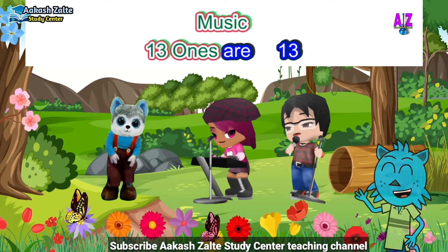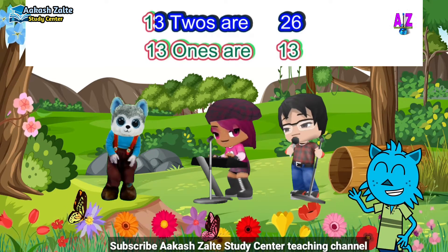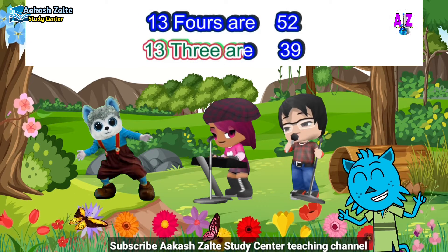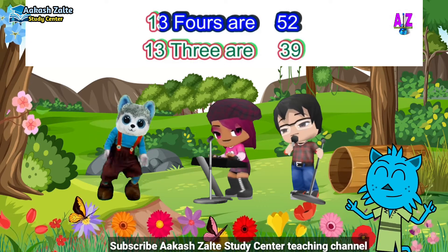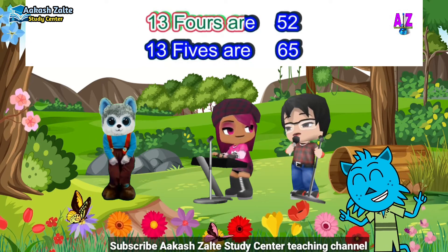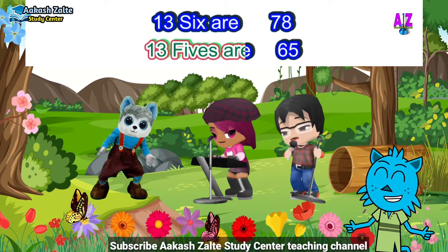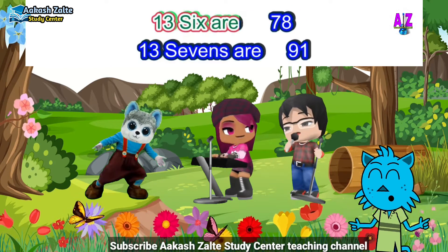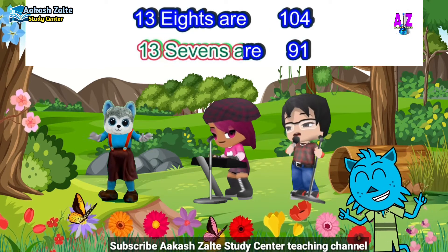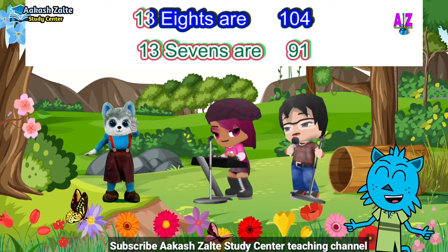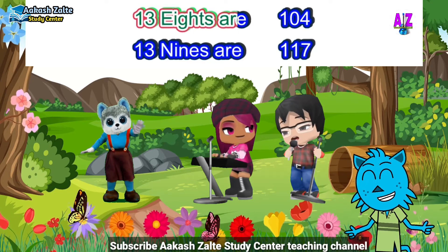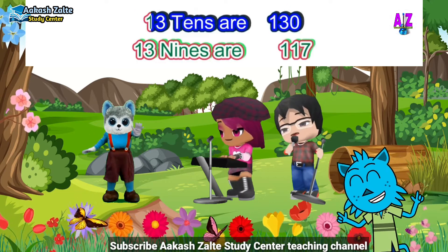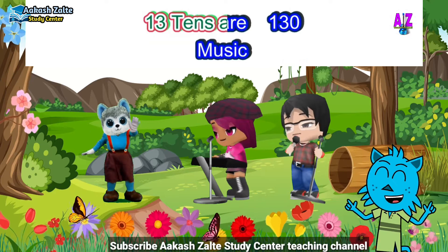13 ones are 13, 13 twos are 26, 13 threes are 39, 13 fours are 52, 13 fives are 65, 13 sixes are 78, 13 sevens are 91, 13 eights are 104, 13 nines are 117, 13 tens are 130.